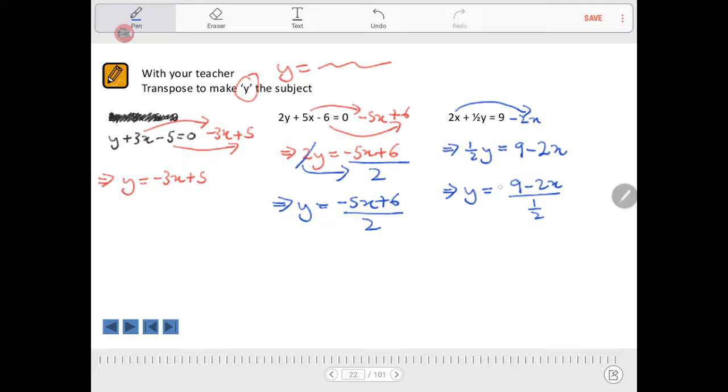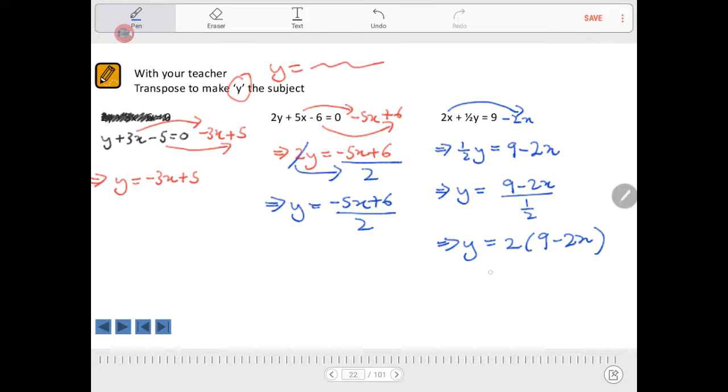because if we divide through by that 1 half, well, we're doing basically 1 divided by 1 half, which gives us 2. So y equals 2 by 9 take 2x, which is equivalent to 18 take 4x. So this looks a lot nicer like this.